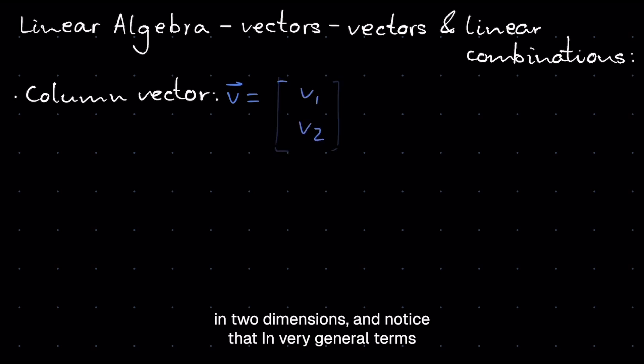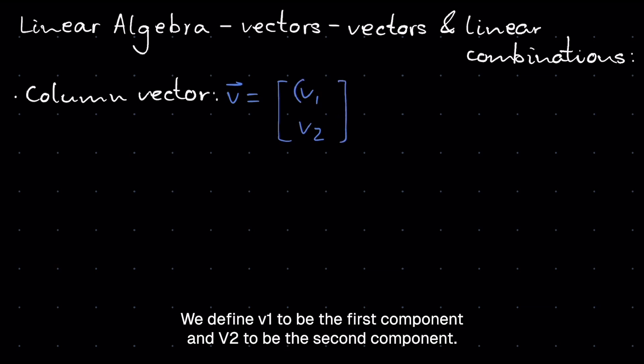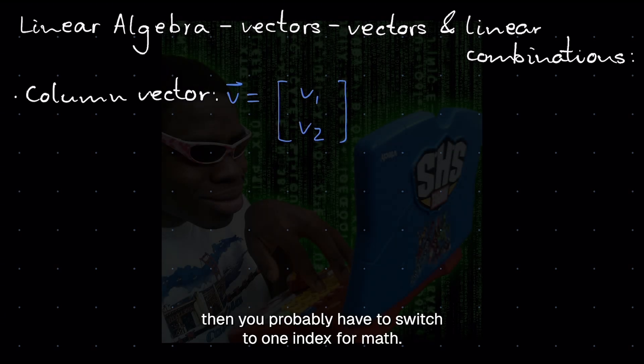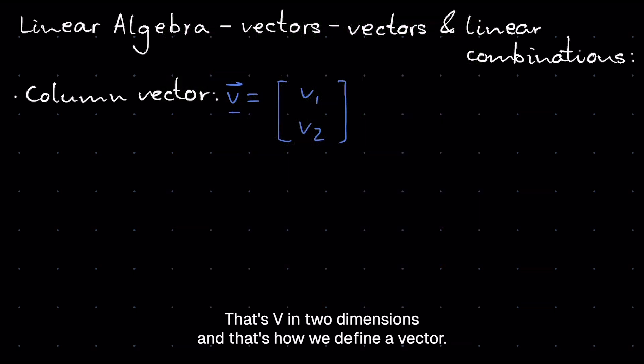And notice that in very general terms, this V can go on forever, but I don't like to start like that in linear algebra. I want to keep this simple and as closely tied to our previous mathematical experience as possible. So let's focus on two components. And talking about components, we define V1 to be the first component and V2 to be the second component. So if you're a programmer and you're zero indexed, then you probably have to switch to one index for math. That's V in two dimensions. And that's how we define a vector.